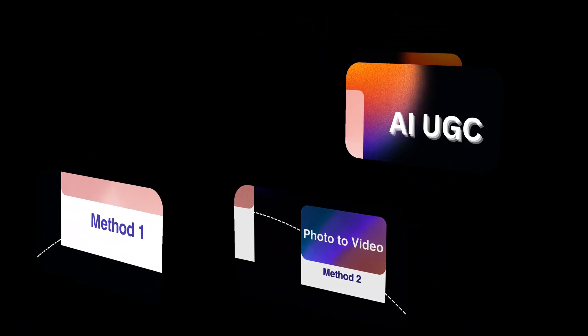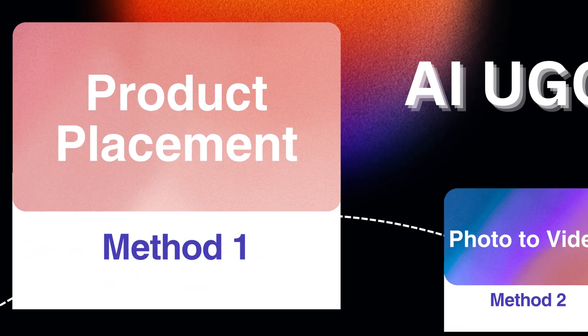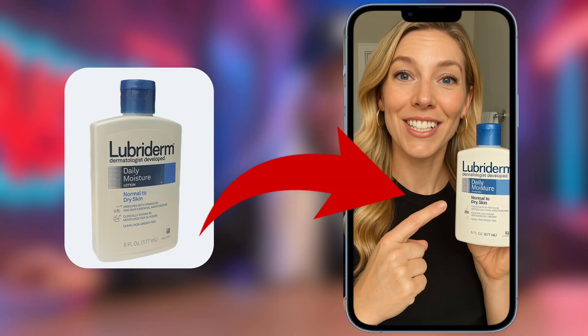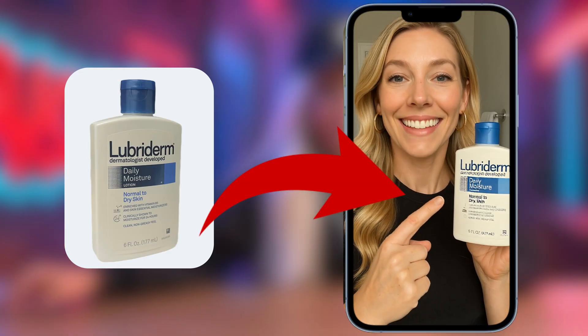The first method is product placement. Basically, you can showcase your product naturally inside an AI influencer's talking clip. Compared to traditional shoots, you can change influencers anytime — all it takes is a few clicks and a minute.